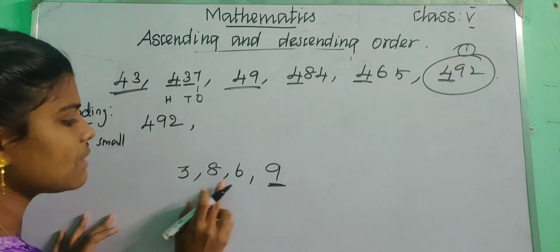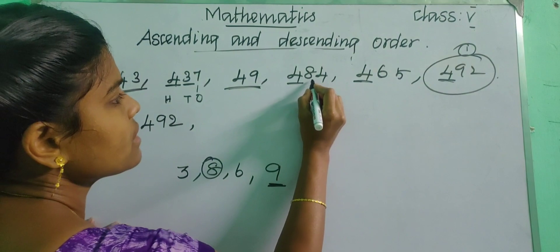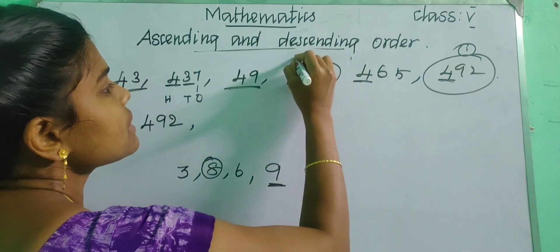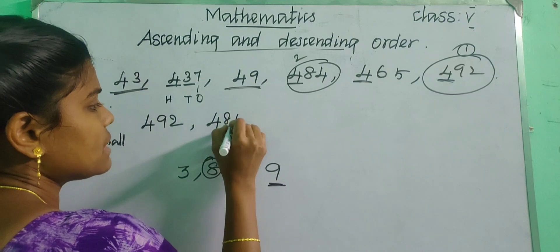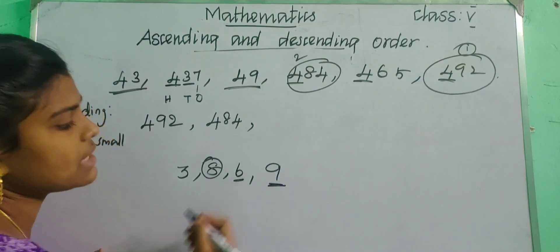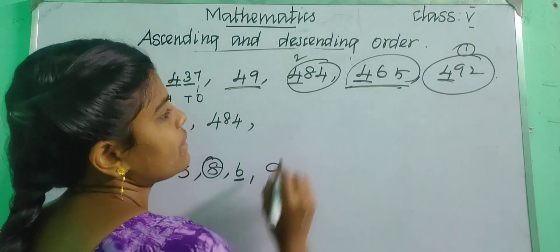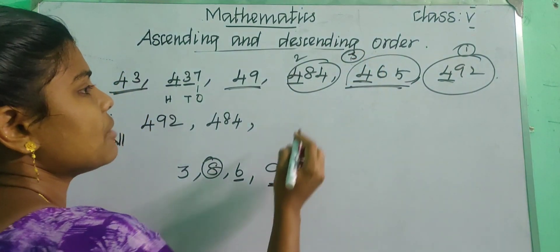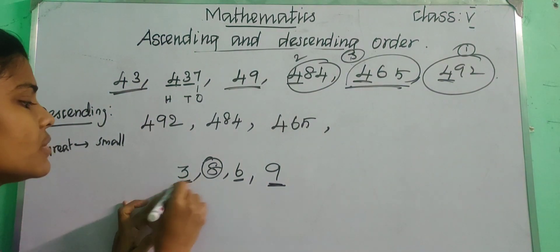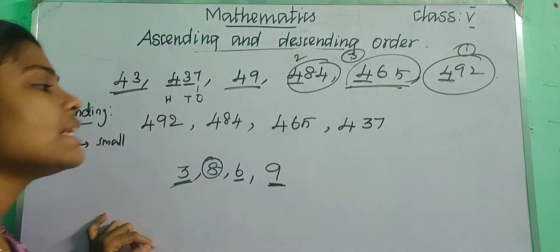The next greatest tens digit is eight, so 484 — four hundred and eighty-four — is the second greatest number. Then six is the next greatest tens digit, so 465 — four hundred and sixty-five — is the third greatest number. And then 437 — four hundred and thirty-seven — is the next, as three is the remaining tens digit.